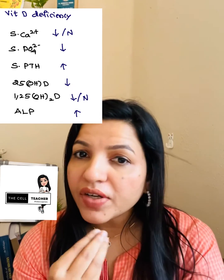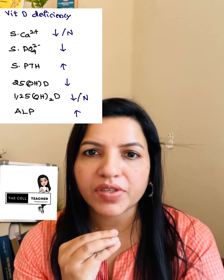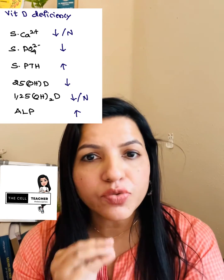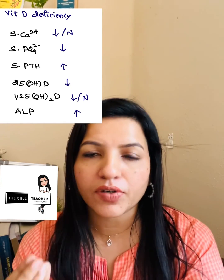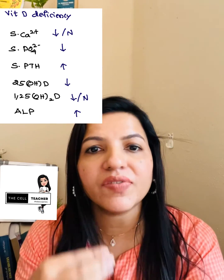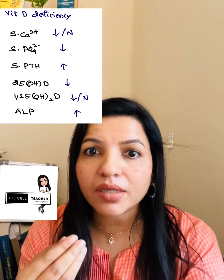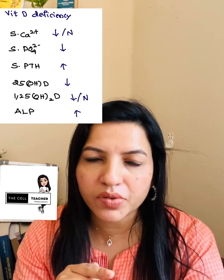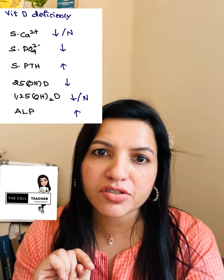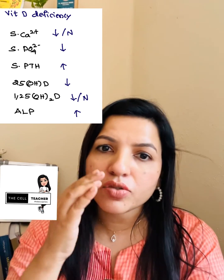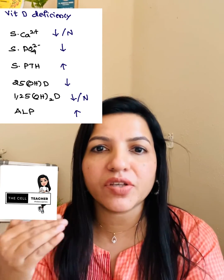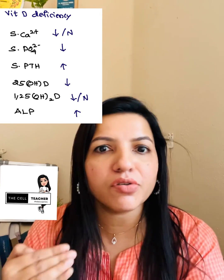25-hydroxycholecalciferol is decreased. 1,25-dihydroxycholecalciferol is decreased, but sometimes it can be normal or even increased — because of secondary hyperparathyroidism. Parathyroid hormone increases the activity of 1-alpha hydroxylase, so whatever 25-hydroxycholecalciferol is available will be converted to 1,25-dihydroxycholecalciferol.